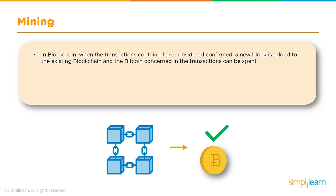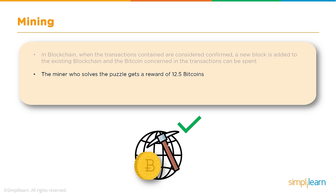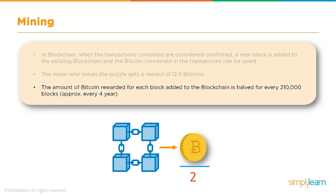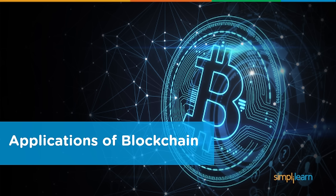When a new block is added to the existing blockchain, the bitcoins involved in its transactions can be spent. As of today, the miner who solves the puzzle gets a reward of 12.5 bitcoins. The amount of bitcoin rewarded is halved approximately every four years — every 210,000 blocks. This is called the halving concept of Bitcoin. When the threshold is reached, the reward reduces to 6.25 bitcoins.